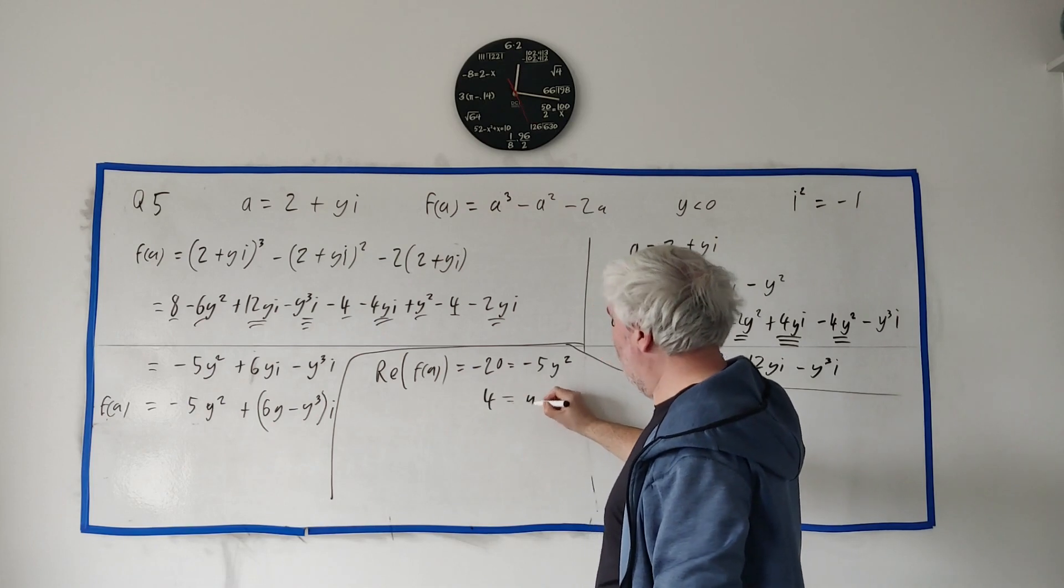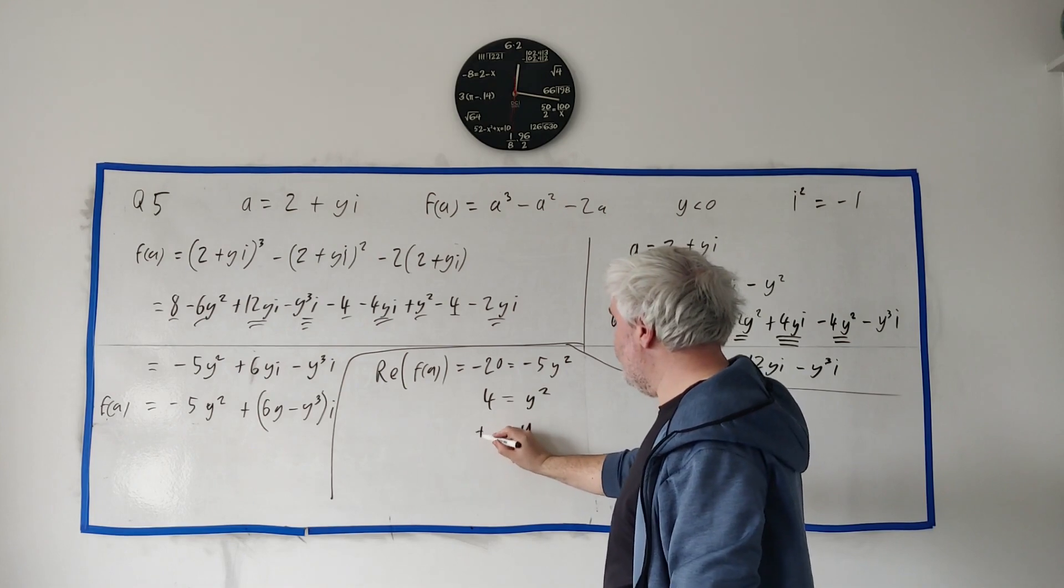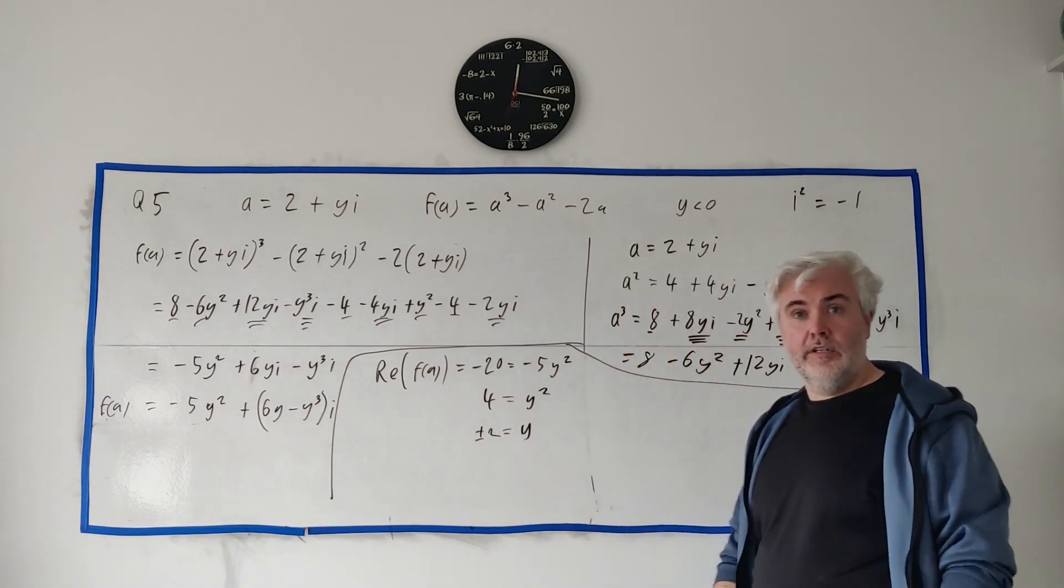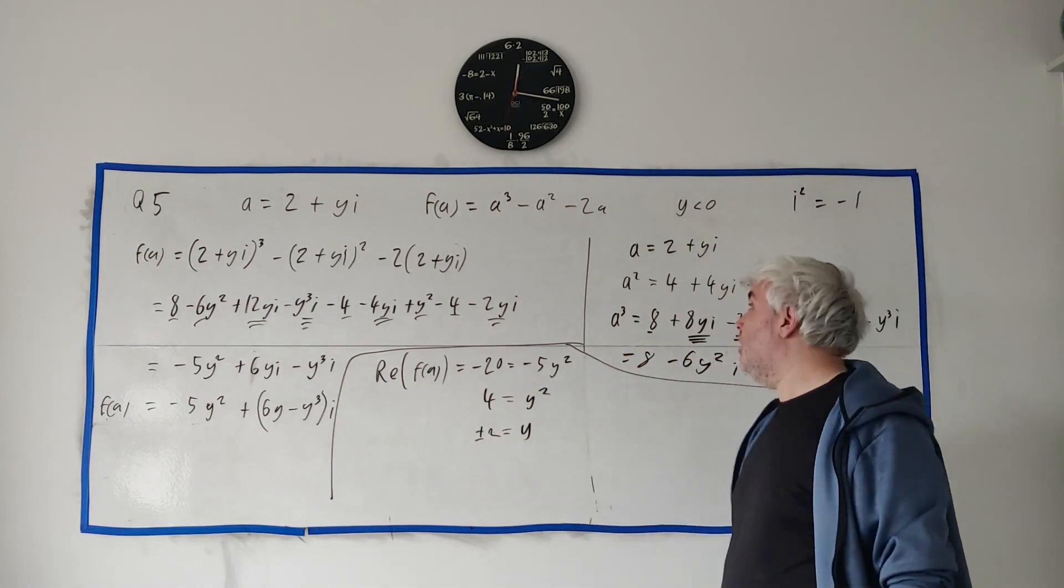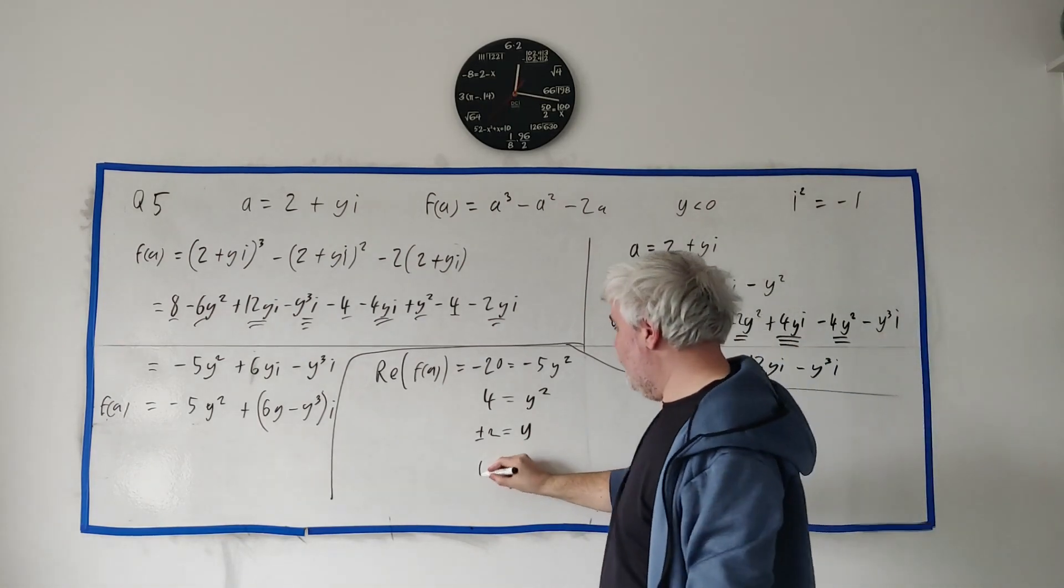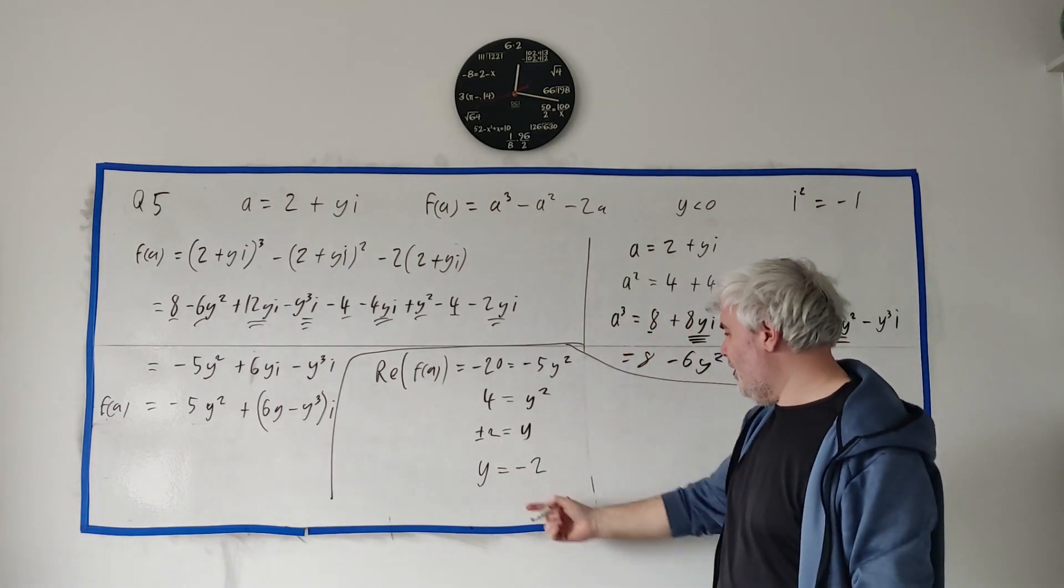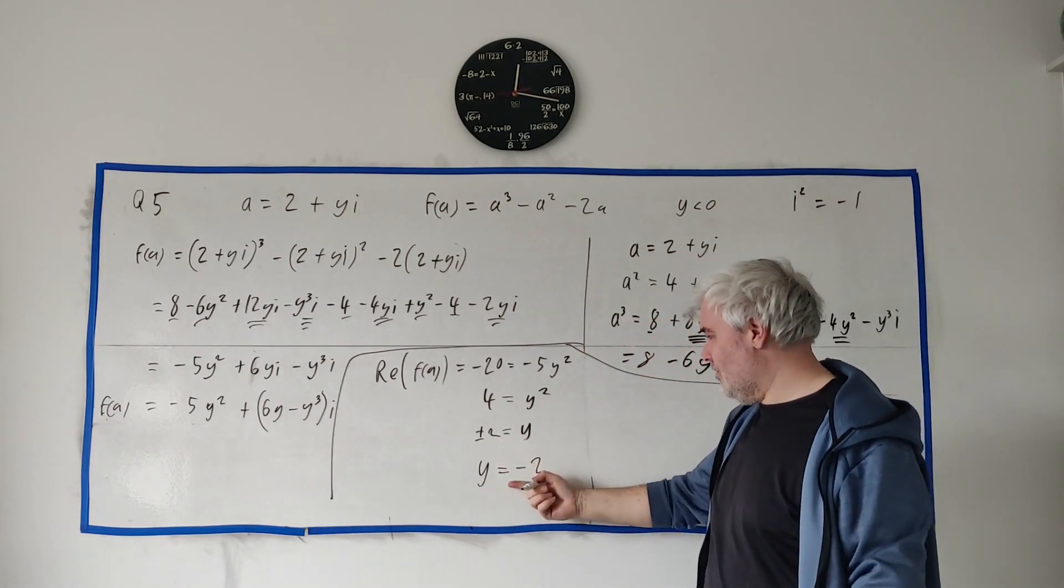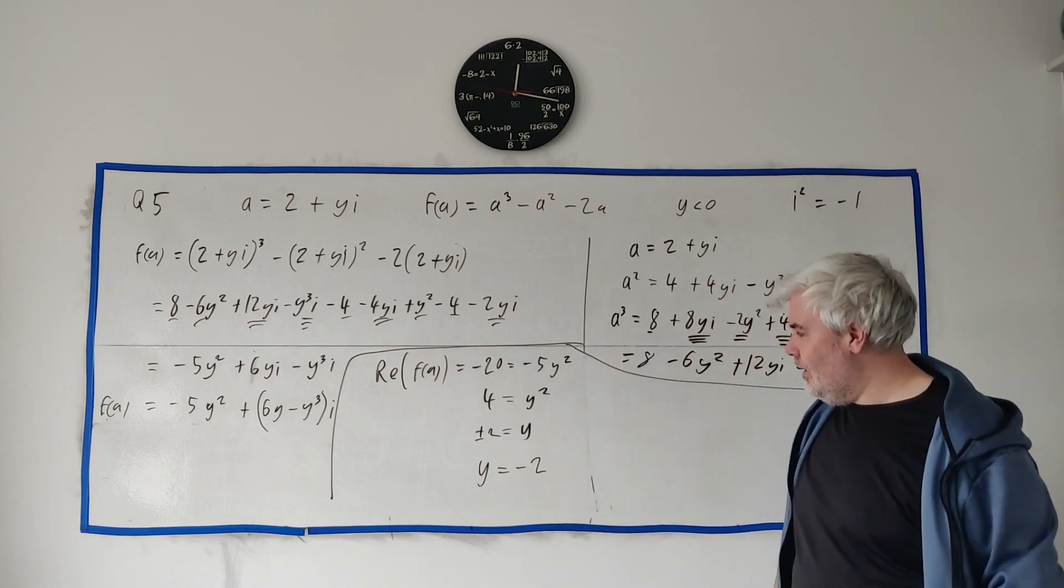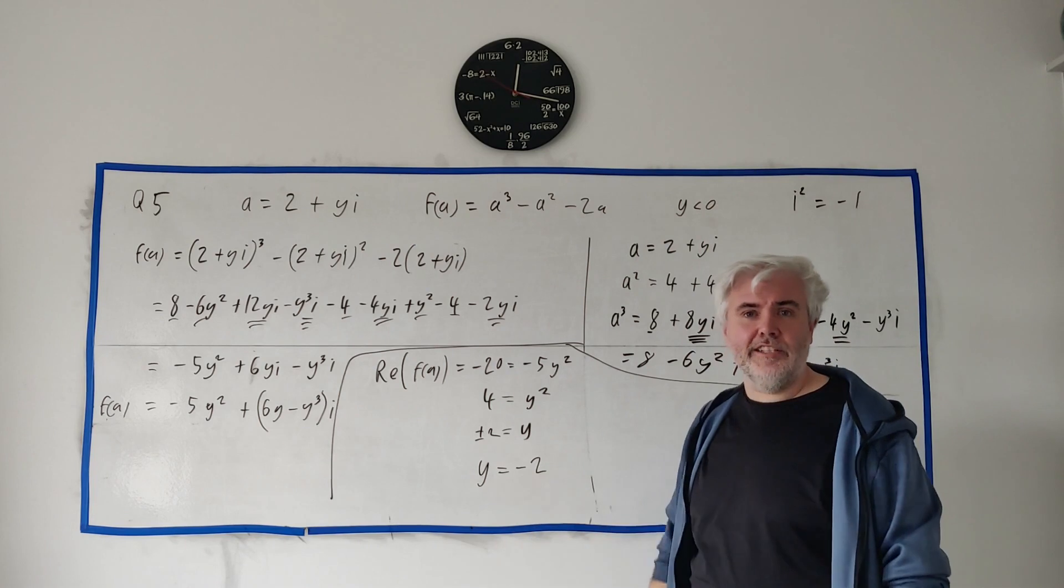Now divide both sides by minus 5. We get 4 is equal to y squared. And we get y is equal to plus or minus 2. You will lose a mark for this. They told us y is less than zero. So we need to put in y is equal to minus 2. You don't have to tell them y there. You can just write it. They'll take the leap with you. Because y is less than zero. So it has to be only that.